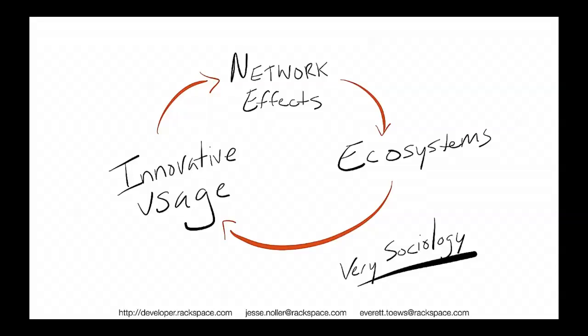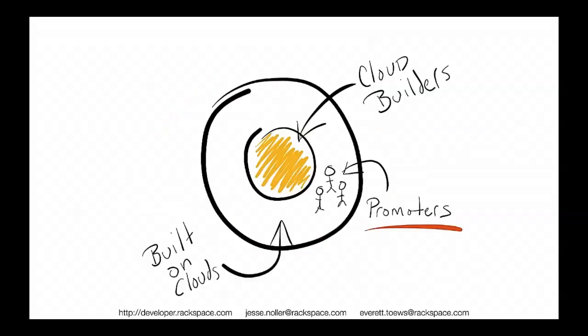This is the virtuous cycle: promoters create things on your platform, feeding into a network effect, then ecosystems, then innovative usage. The next person who says 'I just built this really amazing application' feeds into a bunch of other people who want to build really amazing applications. We want built-on clouds surrounding us, people talking about us and giving constant feedback to the cloud builders. We need these promoters.